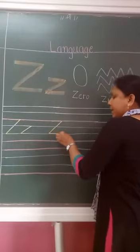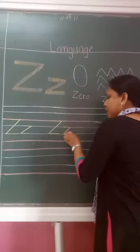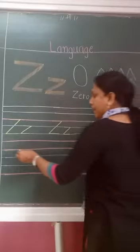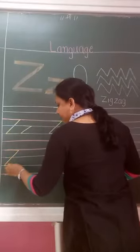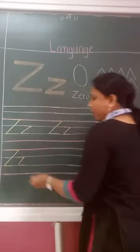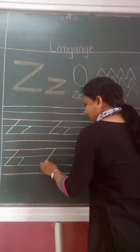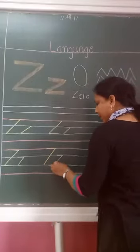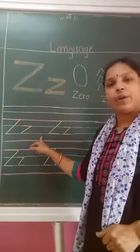Capital Z. Small Z. In second line: capital Z, small Z. Two finger space. Capital Z, small Z. It's an easy alphabet to write.